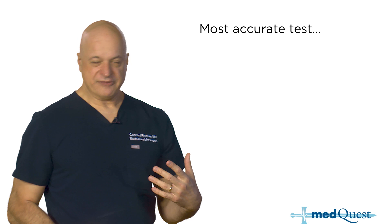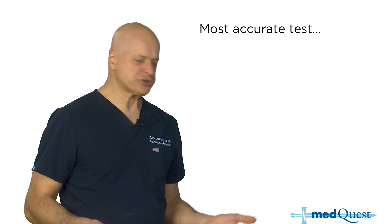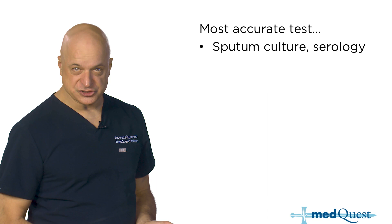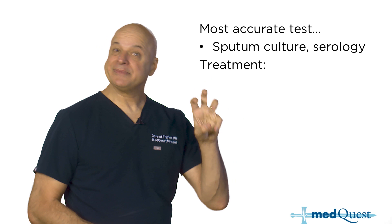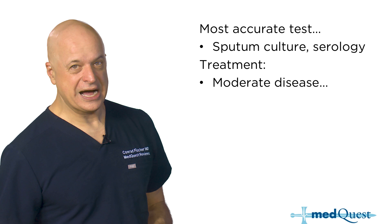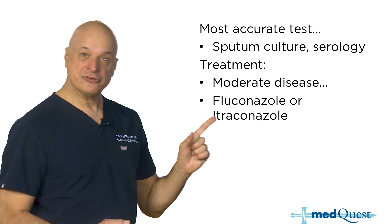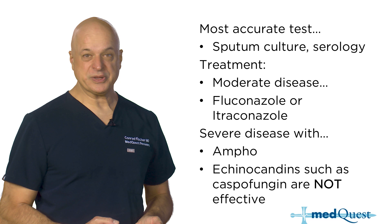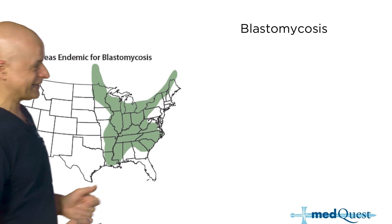For disseminated disease: amphotericin. Localized to the lung: no treatment, resolves spontaneously. Moderate disease: itraconazole or fluconazole. Sputum culture can detect it, but the problem with cultures is it can be dangerous to the lab because it's so widely disseminated. That's why we use serology — and antigen testing for cryptococcus. For moderate or mild molds: itraconazole. Disseminated disease: amphotericin. Echinocandins don't work because the 1,3-glucan linkage is not in dimorphic fungi.